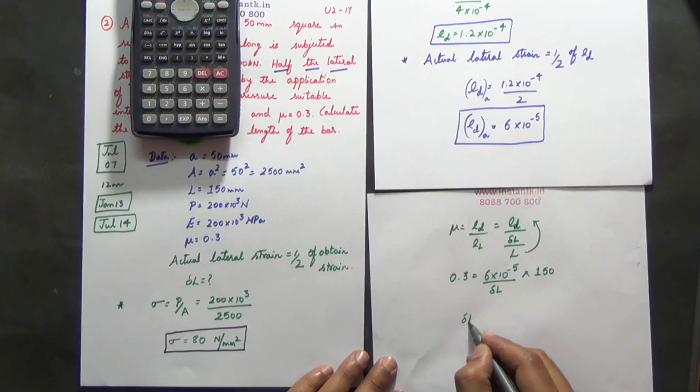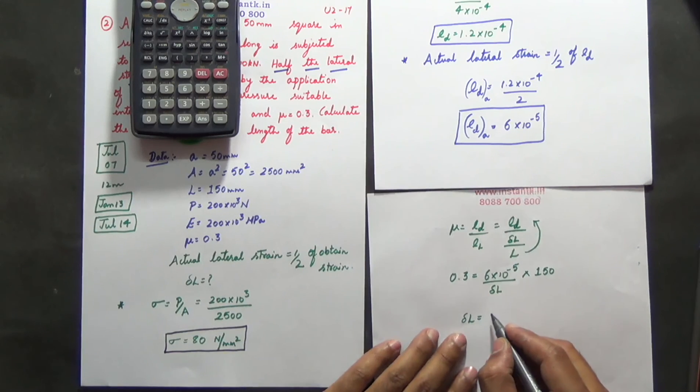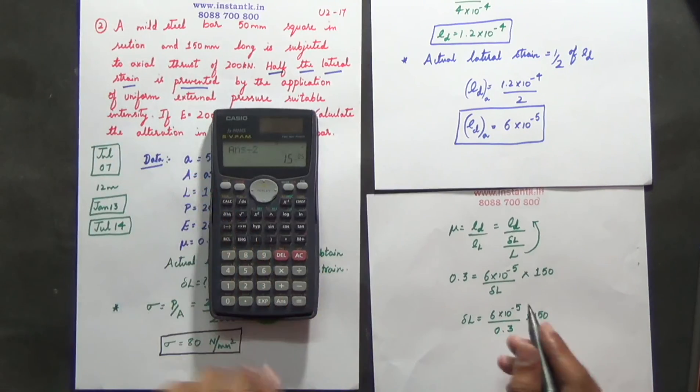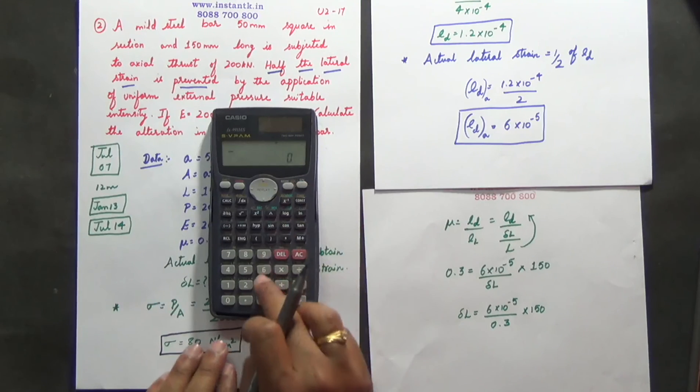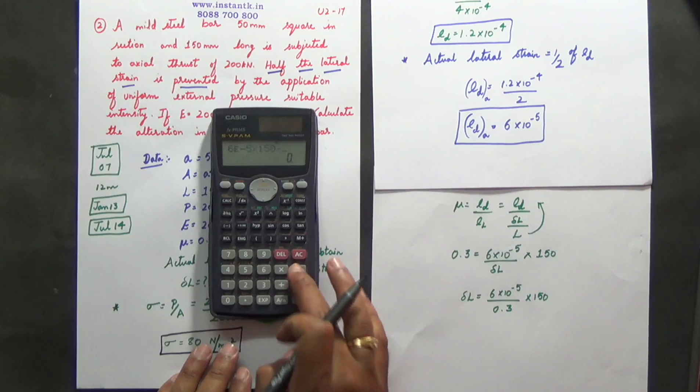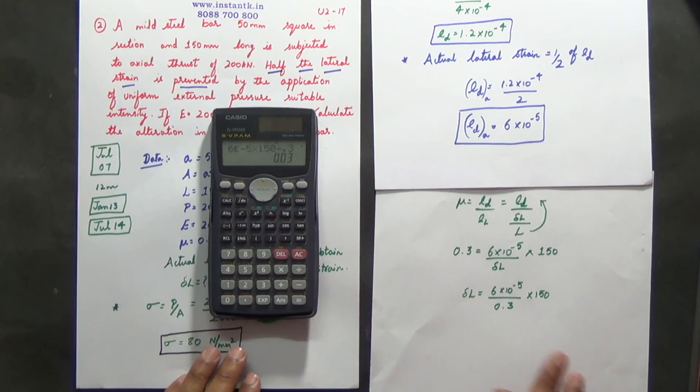So calculate delta L. Delta L is equal to 6 into 10 power of minus 5 divided by 0.3 into 150. So 6 E minus 5 into 150 divided by 0.3, you get the value of delta L as 0.03 mm.